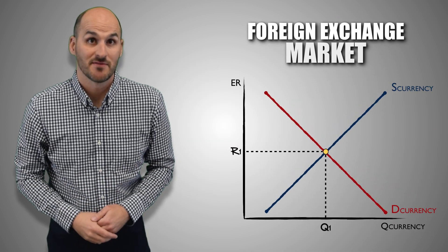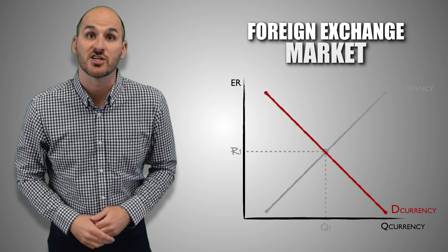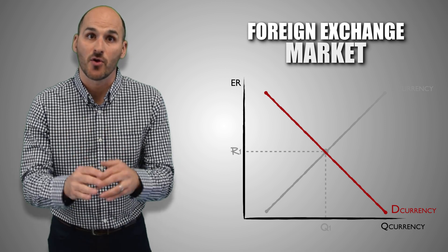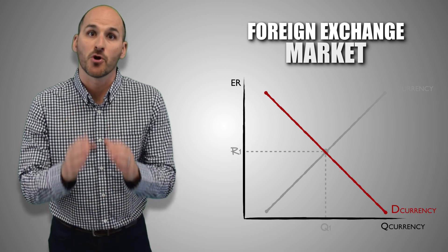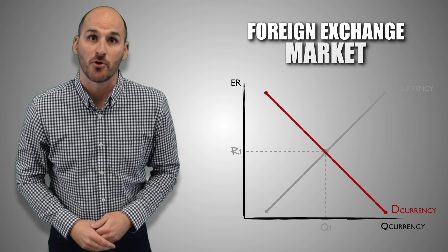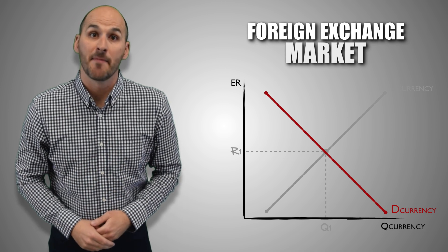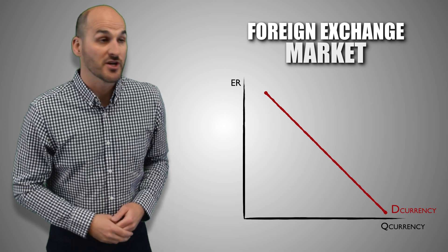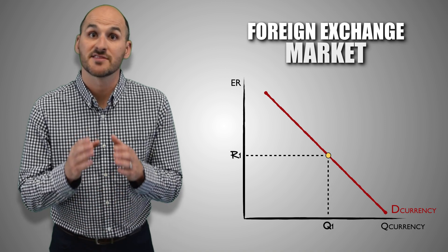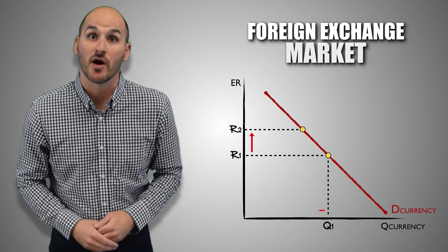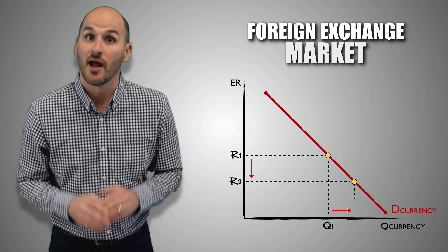The foreign exchange demand curve represents the quantities of an international currency that all domestic and foreign consumers are willing and able to purchase at various exchange rates. Anyone who needs or wants international currency can demand that currency in the foreign exchange market. It is the responsibility of the importer or buyer to convert their currency into that of the exporter or seller, so it is the importers who make up the demand for a currency in the foreign exchange market. Notice that the foreign exchange demand curve is downward sloping, implying that the relationship between exchange rates and the quantity of a currency demanded is inverse. As the exchange rate rises, foreign consumers are less willing or less able to purchase the same quantity of a currency, and therefore buy less. As the exchange rate falls, foreign consumers are more willing or more able to purchase the same quantity of a currency, and therefore buy more.